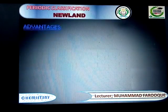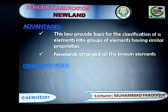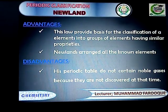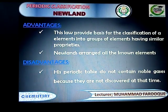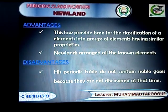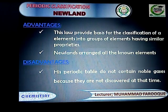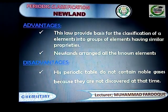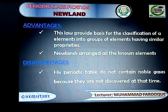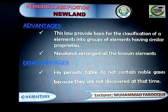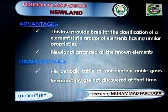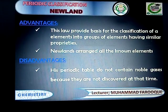Now we look at the advantages and disadvantages of Newlands' classification. Advantage one: this law provides a base for the classification of elements into groups having similar properties — that is, elements present in the same column or group have the same properties. Advantage two: Newlands arranged all the known elements. Disadvantage: his periodic table does not contain noble gases, because noble gases had not been discovered at that time.